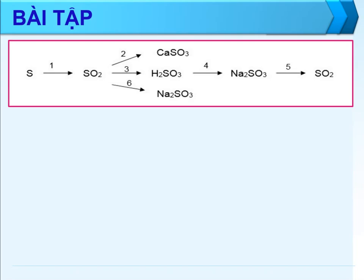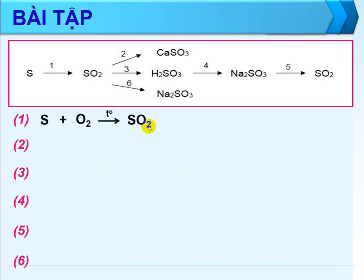Sau phần hướng dẫn, các em có thể hình dung ra để làm bài. Nếu đi thi kiểm tra giữa kỳ hoặc cuối kỳ, các em cũng nhớ đánh số từ 1 đến 6, phương trình nào biết viết trước. Trong 6 phương trình, viết đúng 6 phương trình thì được tổng điểm trọn vẹn; viết sai hoặc để trống cái nào thì sẽ bị mất điểm cái đó. Yêu cầu viết đúng phương trình nào thì tính điểm phương trình đó.